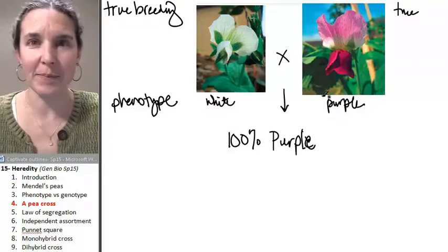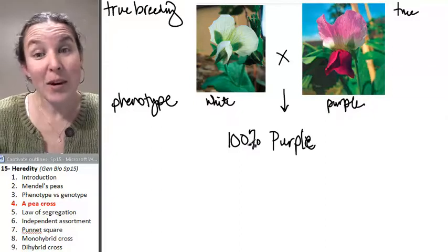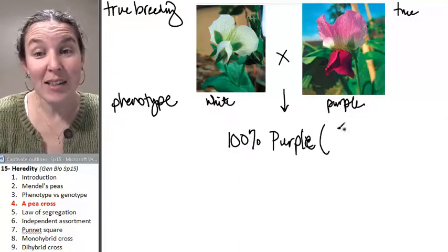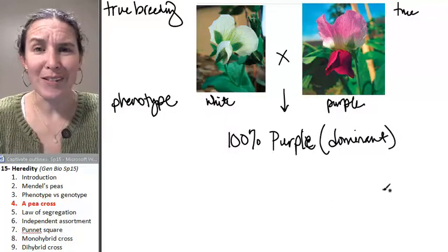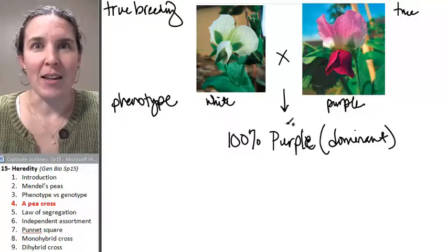Just kidding. Purple, because purple was dominant. This is the dominant trait. He didn't know that. We do. We're smarter than Mendel. Just kidding.